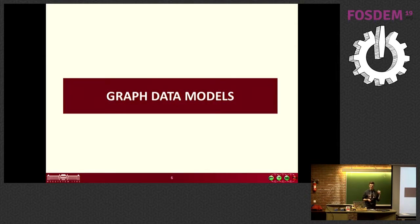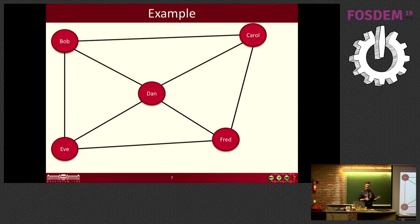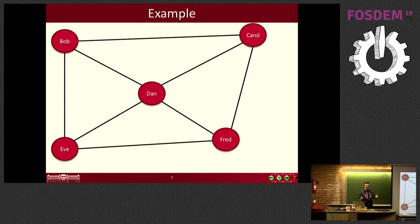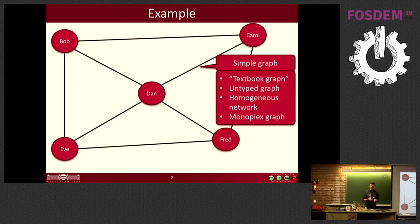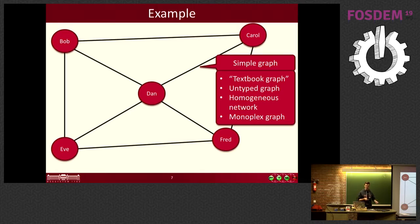When we talk about graph data models, it's important to get the terminology right. In a textbook graph — sometimes called a single graph — you have nodes and edges, like a social graph with five people and acquaintance relationships. This is also called an untyped graph, homogeneous network, or monoplex graph. These are all the same term.